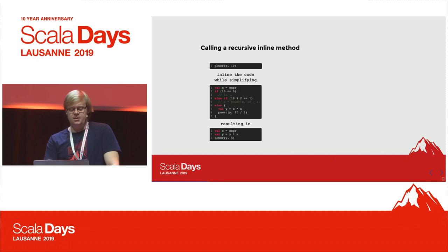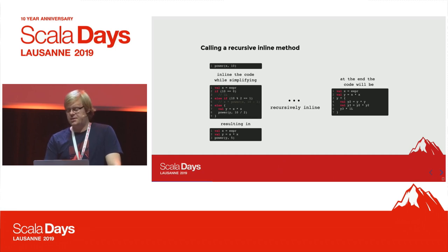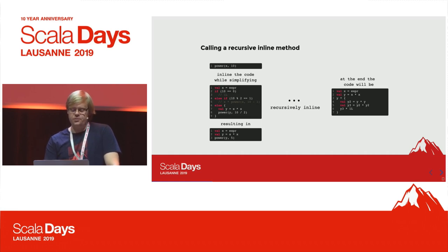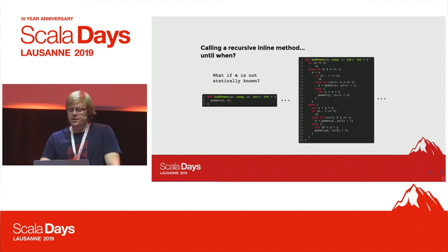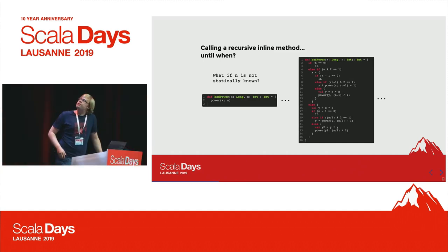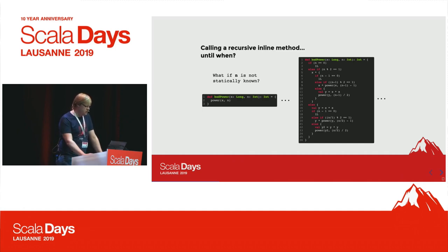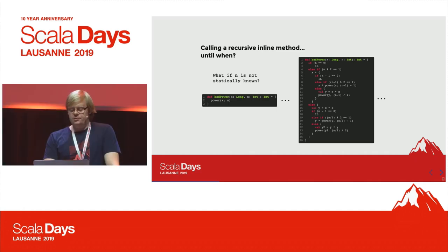What happens if we don't statically know the value of n? For example, with a bad power where n is just a parameter we don't know, if we start inlining we're going to get more and more code, and we'll never be able to know if those if-conditions are going to be true or false. Therefore, this will be just an infinite recursion.